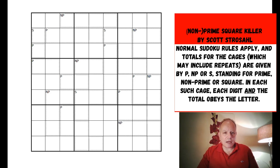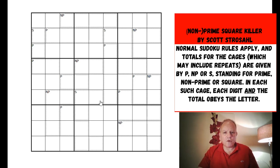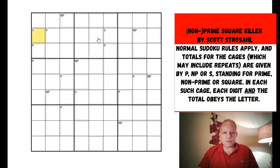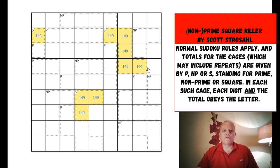So what we have to decide is: what are the square numbers? They're 1, 4, and 9. What are the prime numbers? 2, 3, 5, and 7. The non-prime numbers are not just 6 and 8 - they can include the square numbers as well. You can tell that because this three-cell cage is all in the same box, so they have to be three different numbers, meaning non-prime can't just be 6 and 8.